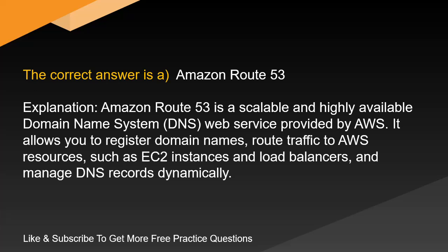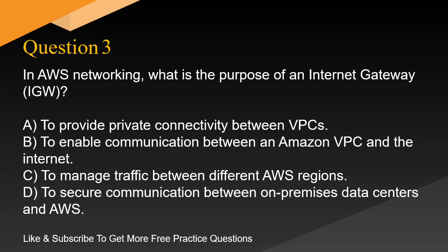Explanation. Amazon Route 53 is a scalable and highly available domain name system, DNS, web service provided by AWS. It allows you to register domain names, route traffic to AWS resources such as EC2 instances and load balancers, and manage DNS records dynamically.